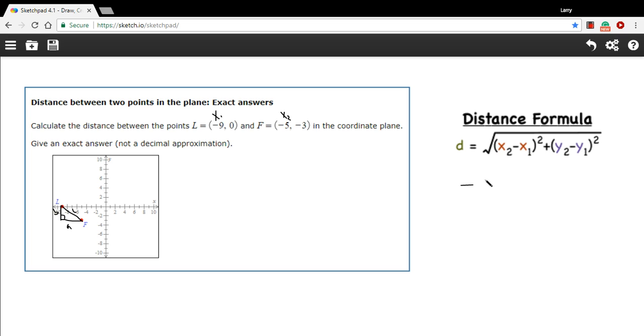So that's a negative 5 minus a negative 9. That's going to get squared. And then the Y coordinate, same thing. This is Y1 and this is Y2. So this is going to be a negative 3 minus 0 squared.